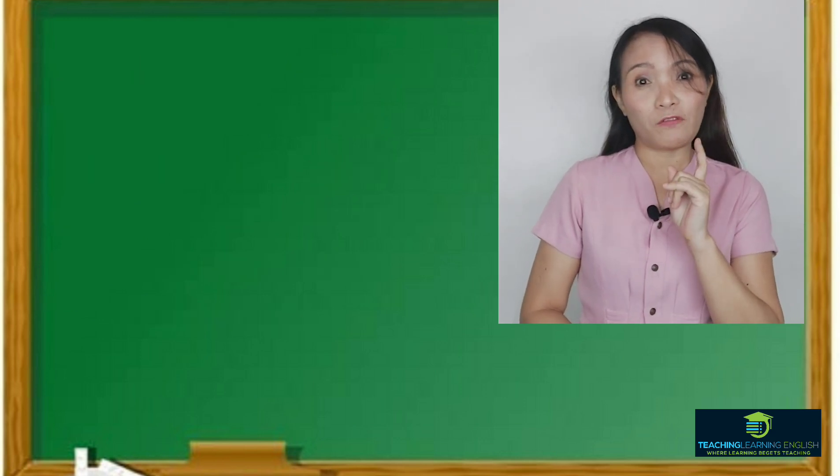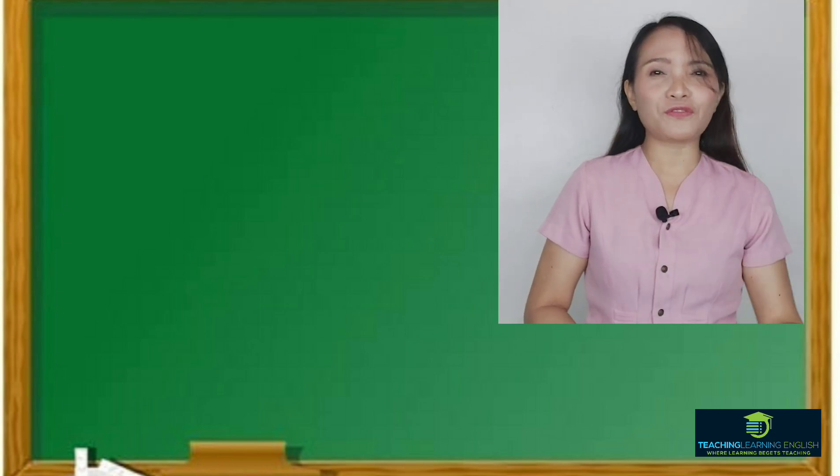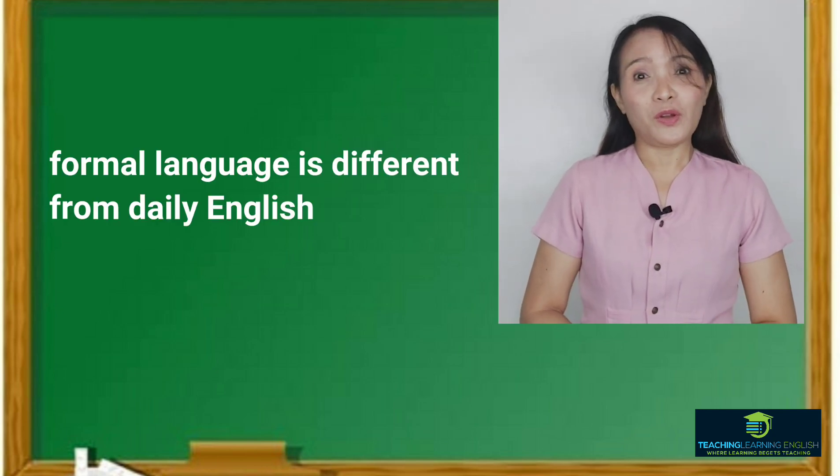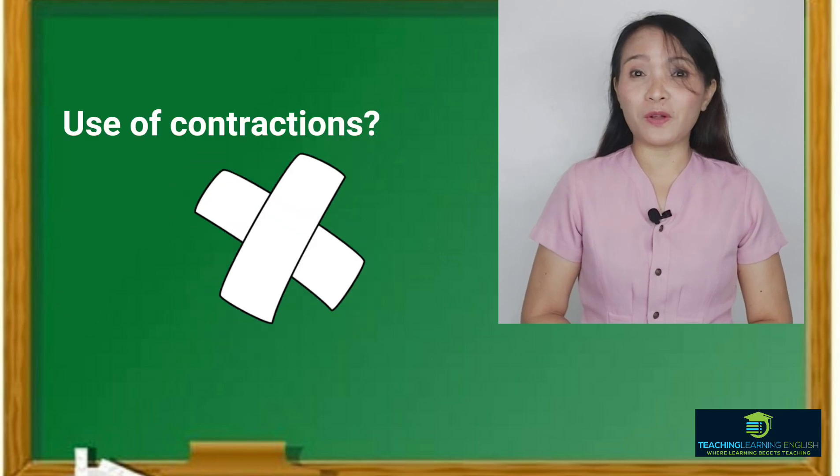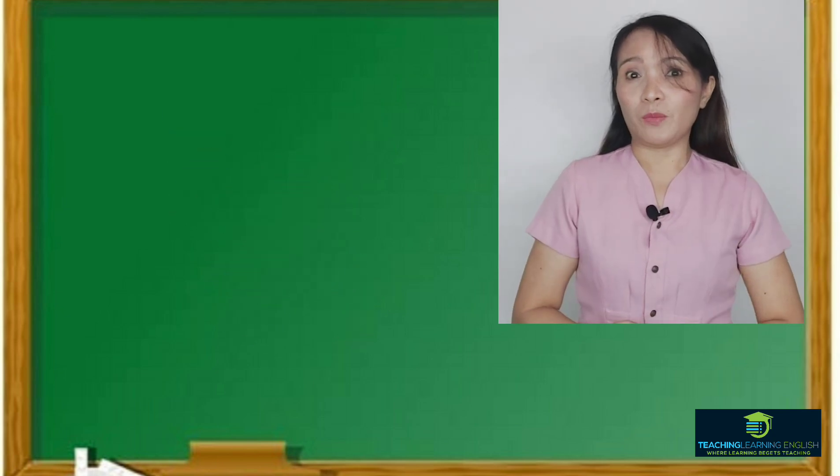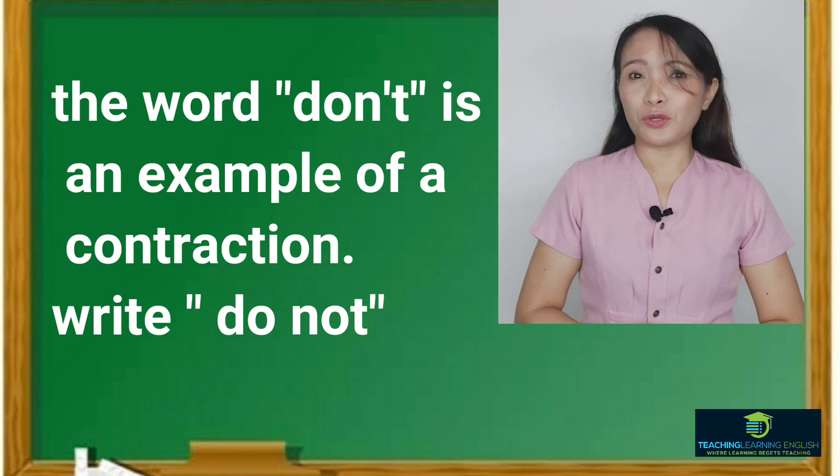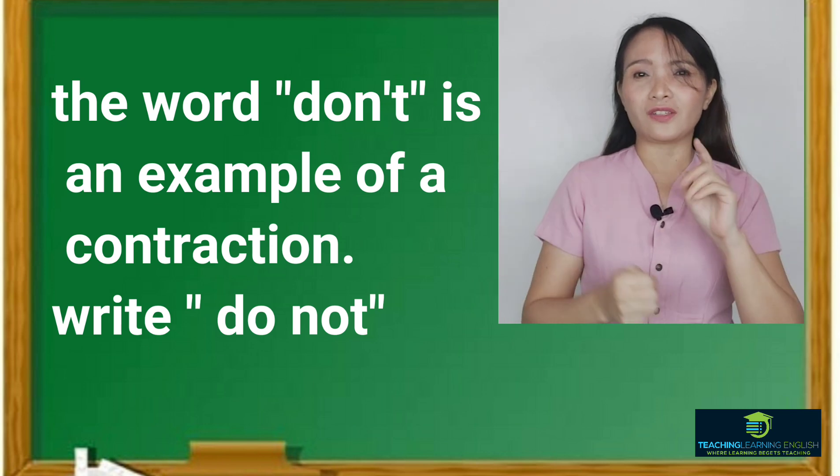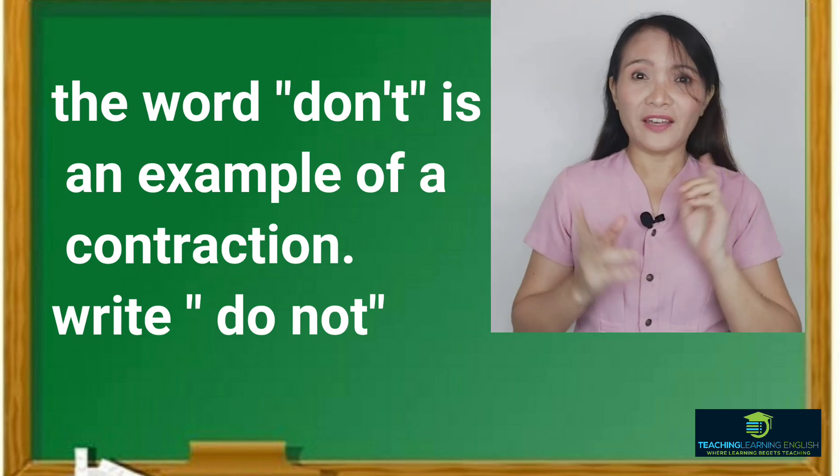Take note of the word formal. We discuss that formal language is totally different from daily conversations. We don't use contractions or informal vocabulary. Let's say the word don't. In academic writing, we need to write the two words do not instead of don't. That is contraction.